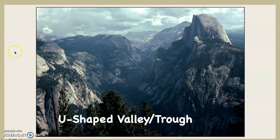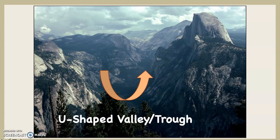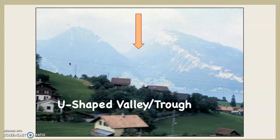Here we have Yosemite Valley — the great, glorious U-shaped valley or glacial trough. There was 3,000 feet of glacial ice going through that thing 30,000 years ago. Look at that U-shape. And this next image, blurry because I was on a train in Switzerland when I took it, shows a U-shaped valley in the background. A perfect glacial trough.